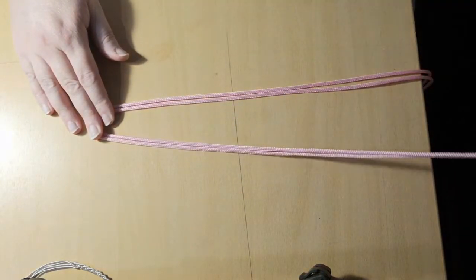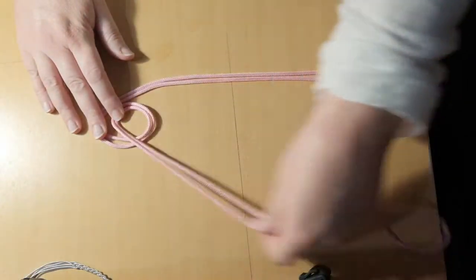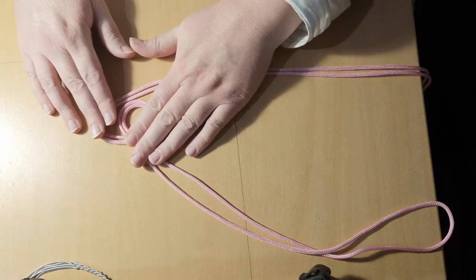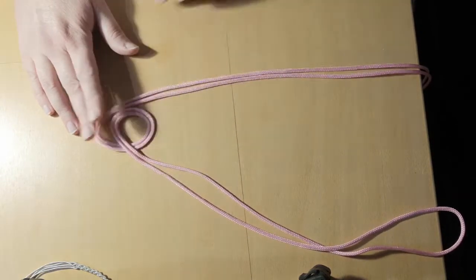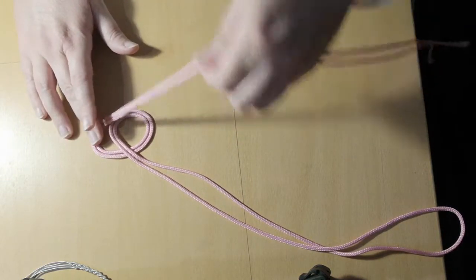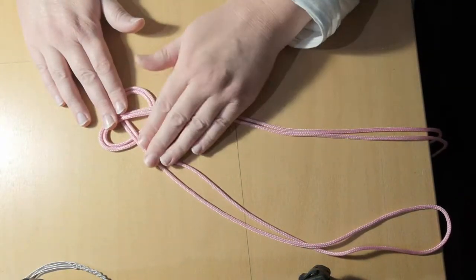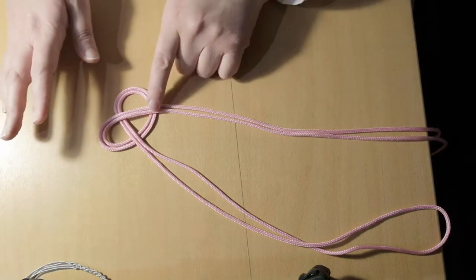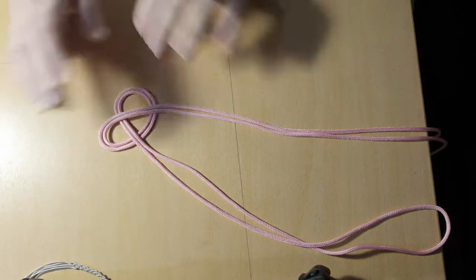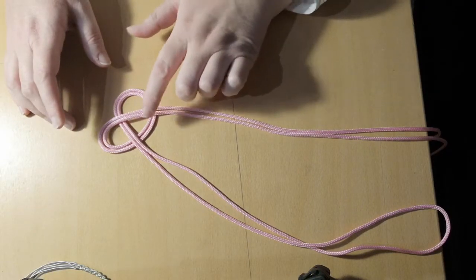So first of all you make a loop like this. And for the first knot it is actually a little bit easier if you put it on a flat surface like this, because then you can make the loop and you can just put these two over. The last time I talked about a pretzel with one over and one under. This is the same technique but for this knot you start it with both over.